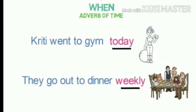The next kind is adverb of time, which tells us when the action has taken place. For example: tomorrow, now, yesterday, ago, early, today, already, never, daily. For example, 'Kriti went to the gym today' — 'today' tells us when. 'They go out to dinner weekly' — 'weekly' gives the answer of when.